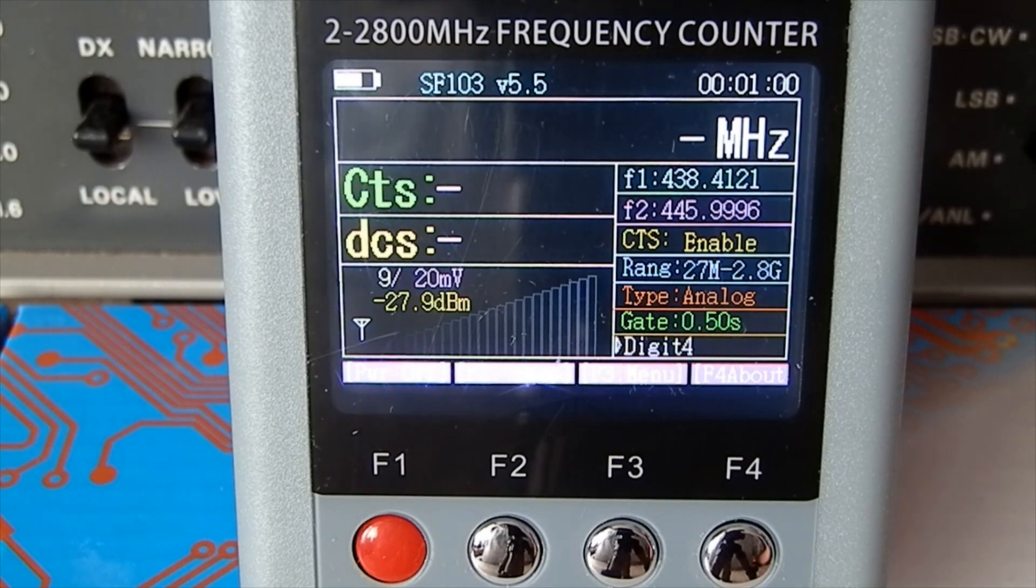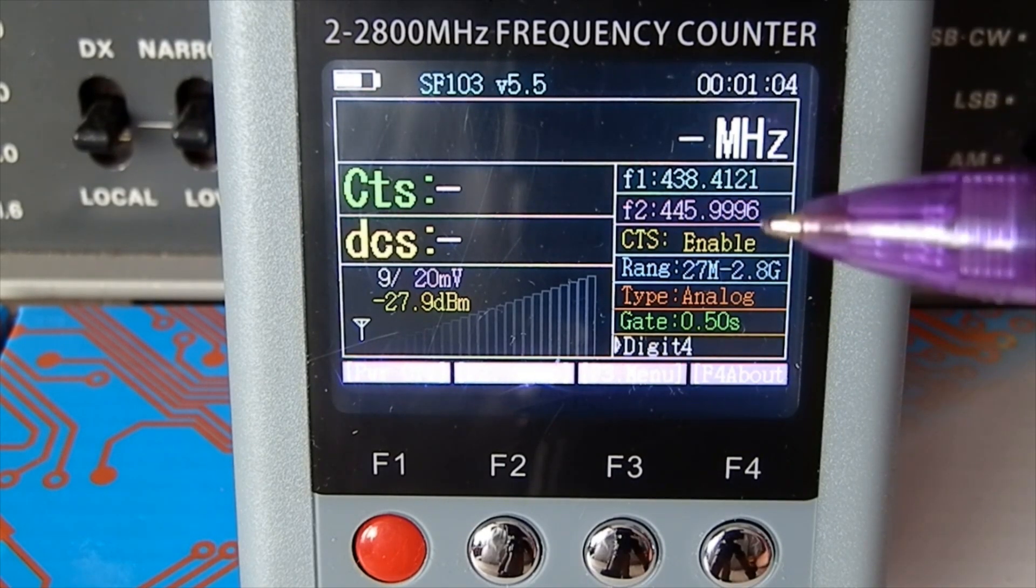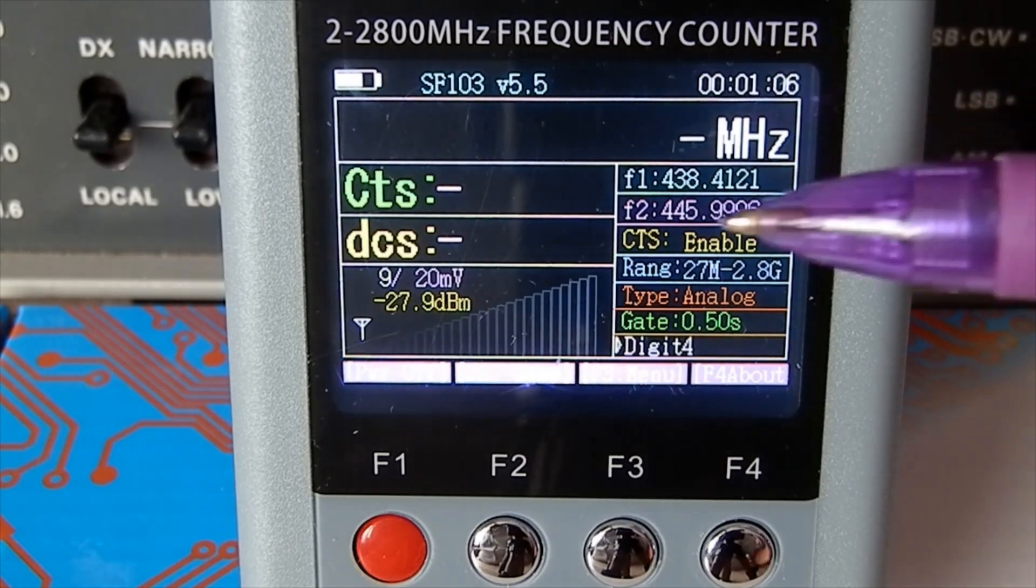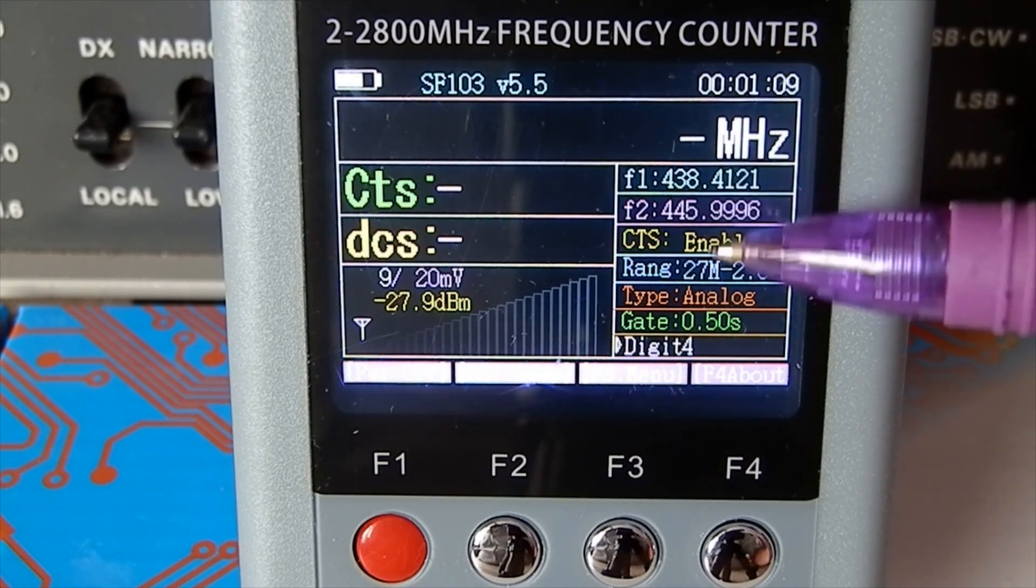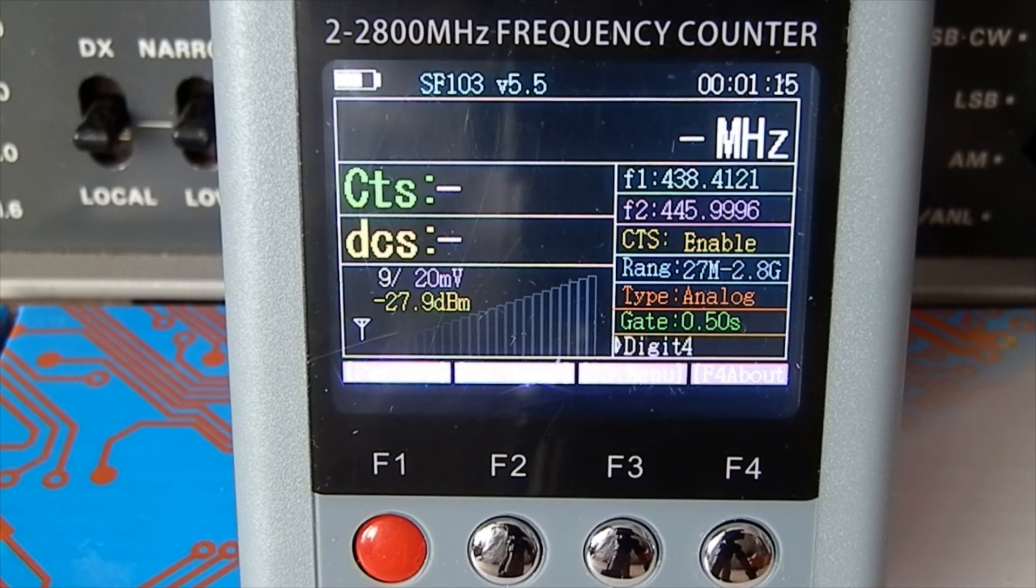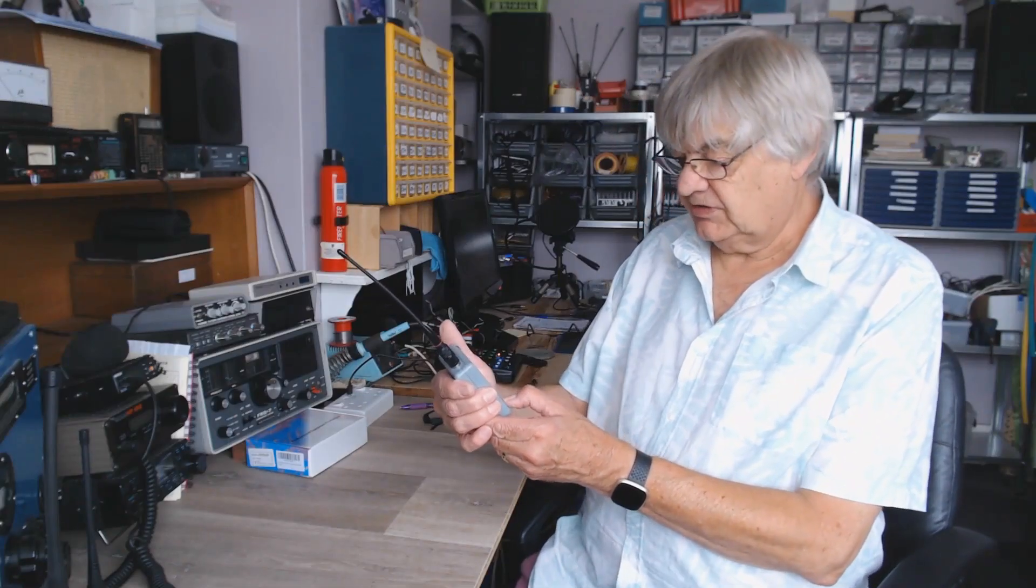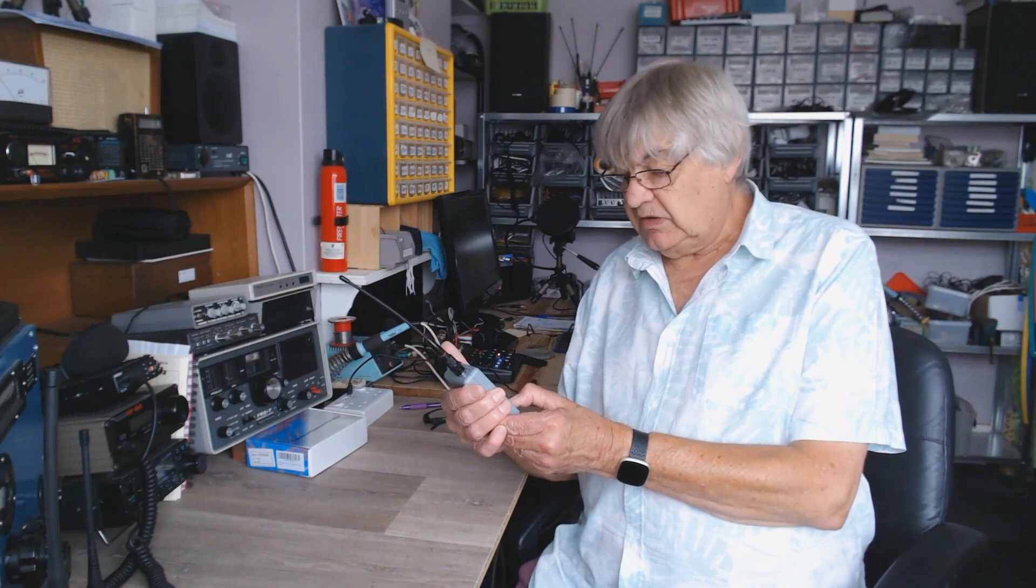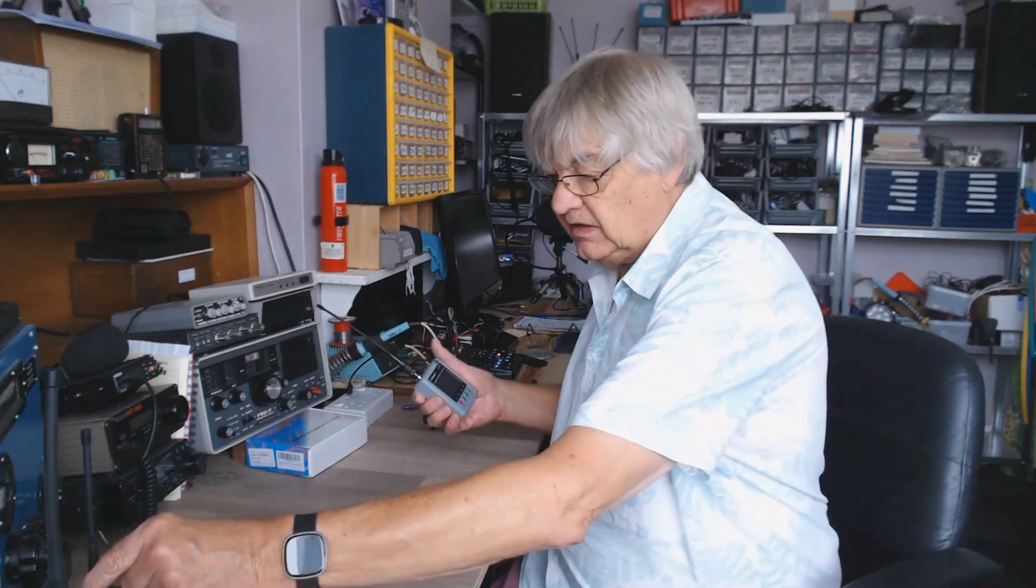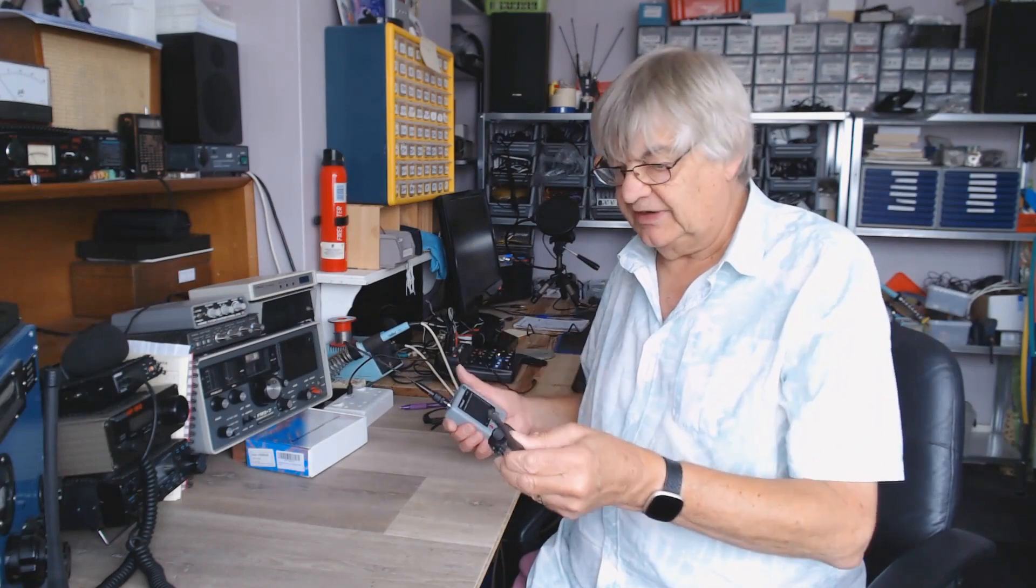Also on the screen here, it keeps, here it shows you the last frequencies it's had. There's 445, there's 438. There's various things in the menu you can do, but isn't that fantastic? I mean for 44 quid, it's amazing. It's fully charged at the moment. I'll turn that off.